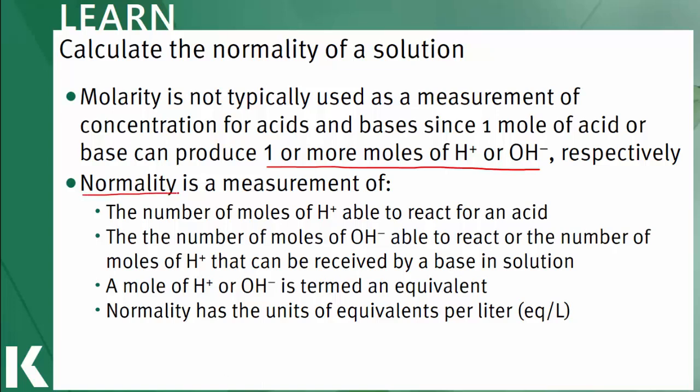For an acid, normality takes into account how many moles or equivalents of hydrogen ions that are donated per mole of acid. For a base, normality takes into account the equivalents or moles of hydroxide ions that are donated per mole of base, or how many equivalents of hydrogen ions that can be received by the base.